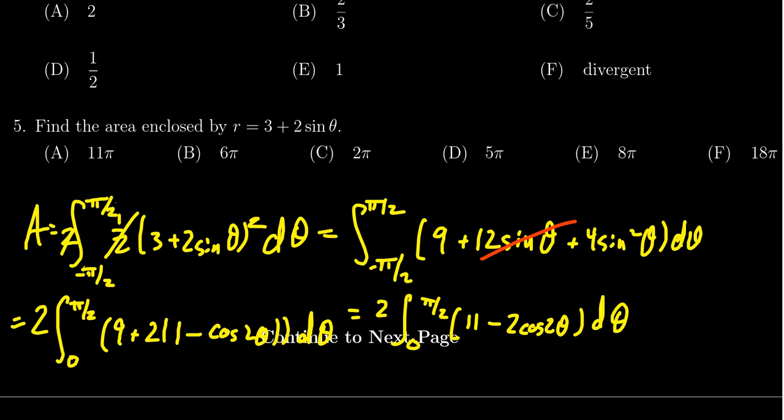So doing this down below, if we take the antiderivative here, eleven becomes eleven theta. And then we're going to get a minus sine of two theta as you go from zero to pi halves. Notice that when you plug in zero, this will disappear. When you plug in the pi halves, you're going to get sine of pi, which is also zero. So that disappears entirely. So this thing is going to become two times eleven times pi halves. The twos cancel. And we see that the area here is going to be eleven pi.